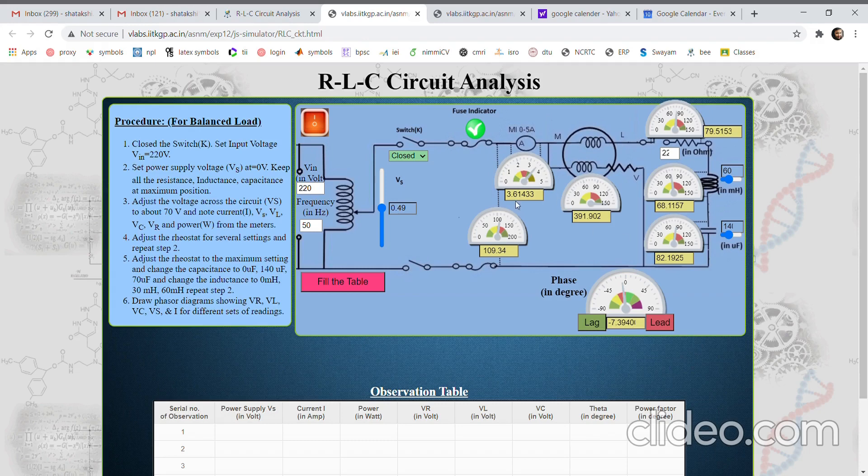So now we can see the readings. 109 volt is being impressed upon the circuit and current is 3.6 amperes and 391 watt is the power which is being consumed. Right now my capacitive reactance is higher, that's why the voltage across capacitor is higher. So it is a capacitive circuit, so current should be leading. Actually this is 7.39 degree lead.